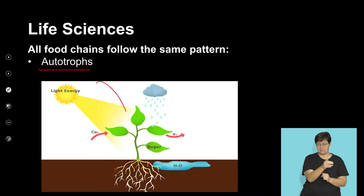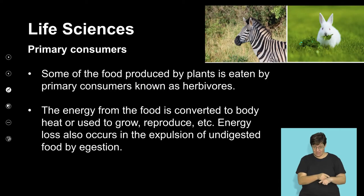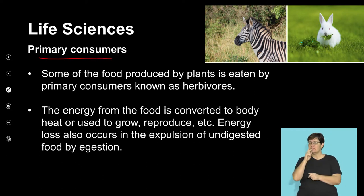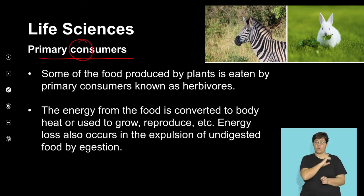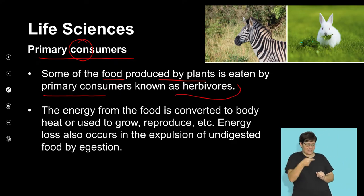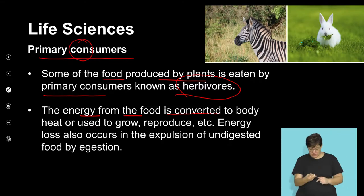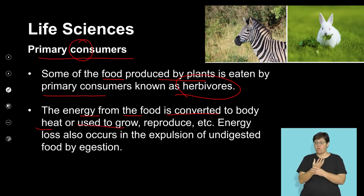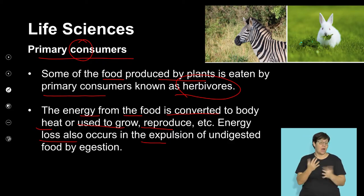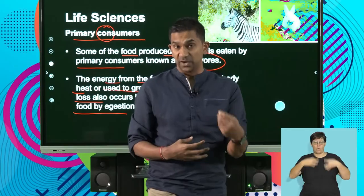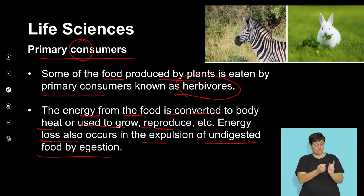As we move through a food chain, we see primary consumers. The word consume refers to users — some of the food produced by plants is eaten by primary consumers, often known as herbivores, which are organisms that feed off plants. The energy from the food is converted to heat or used to grow and reproduce, but energy is also lost through undigested food released by the body, or lost during respiration or as waste products.